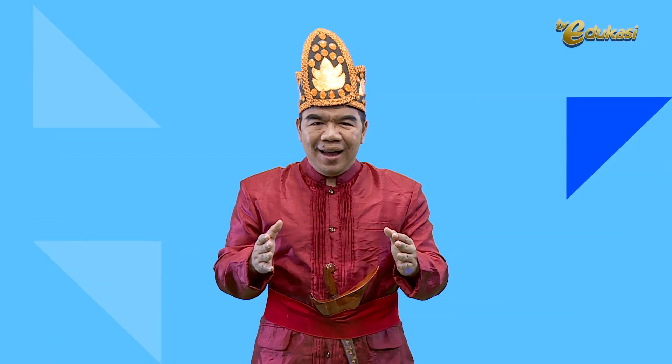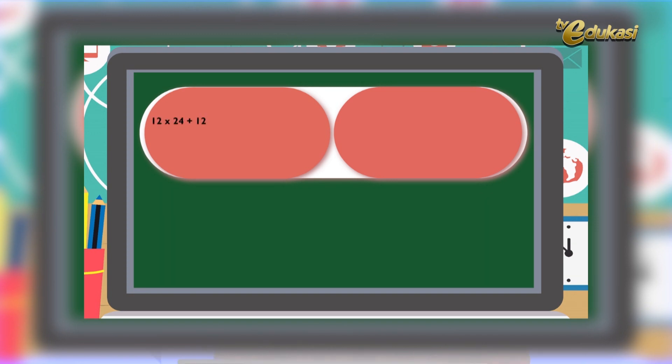Bapak akan menerangkan hal itu dengan konsep Matematika Nalaria Realistik. Perhatikan penjelasan berikut ini. 12×24 ditambah 12×76 sama dengan 288 ditambah 912 sama dengan 1200. Ini bisa menjadi 12×(24+76) sama dengan 12×100 sama dengan 1200.